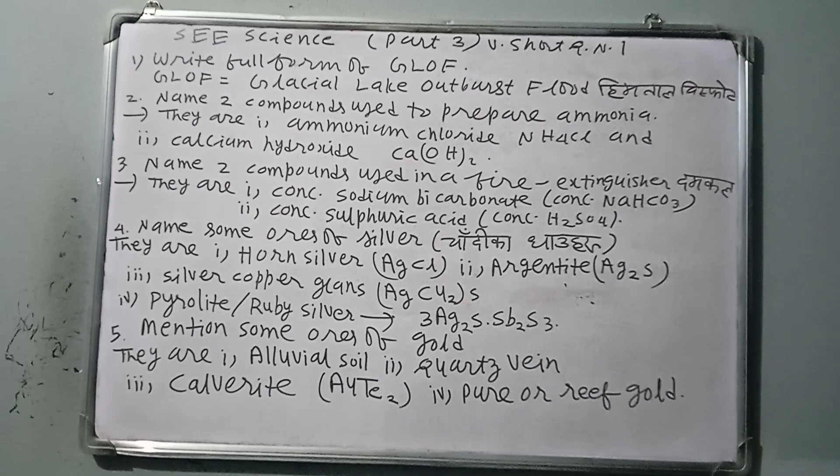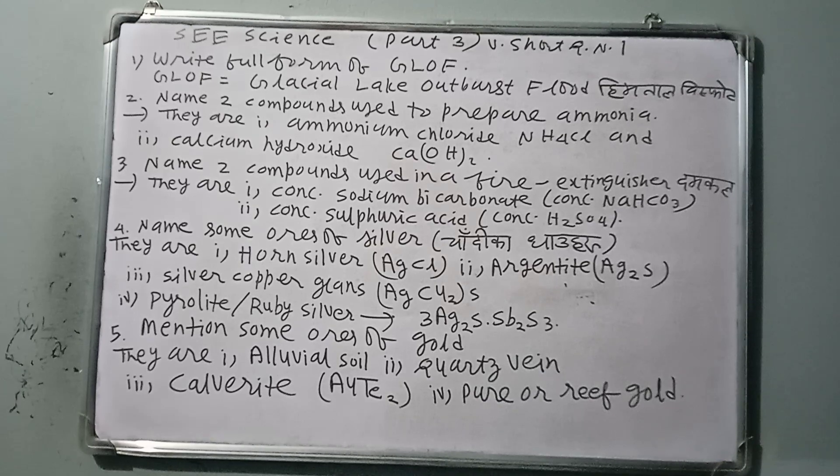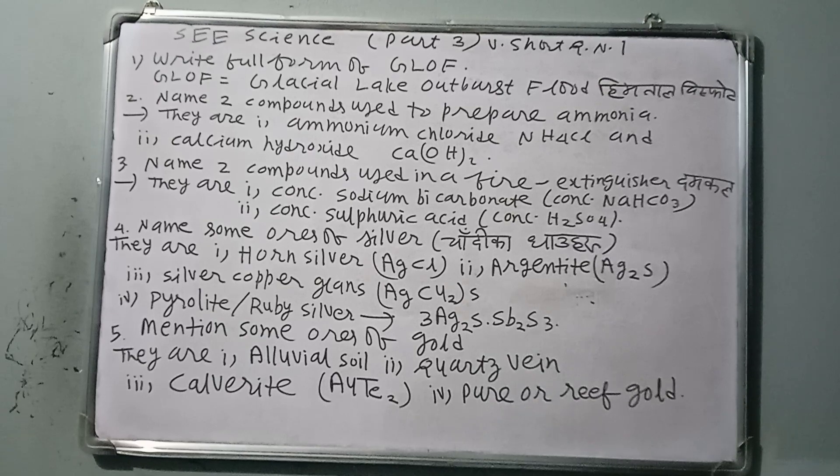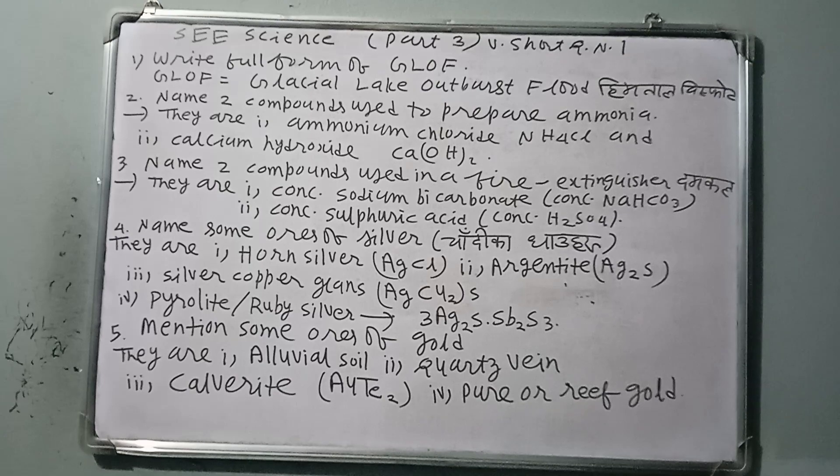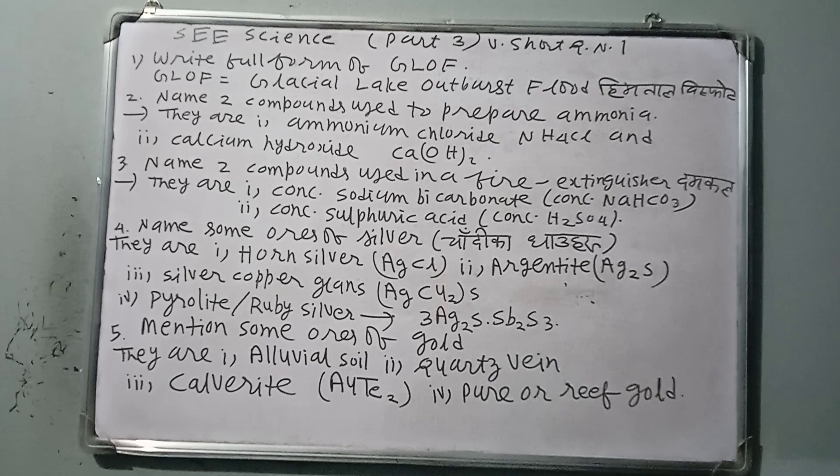Question number four: Name some ores of silver. Answer: Some ores of silver are as follows. Number one, Horn Silver AgCl, that is silver chloride. Number two, Argentite, the main ore, Ag2S, that is silver sulfite.